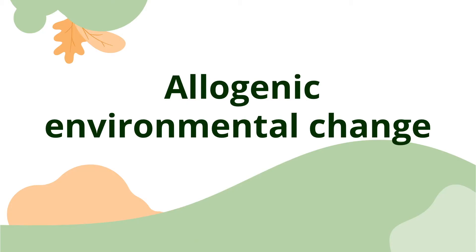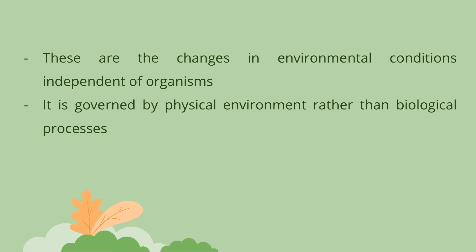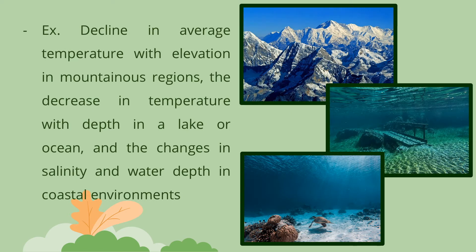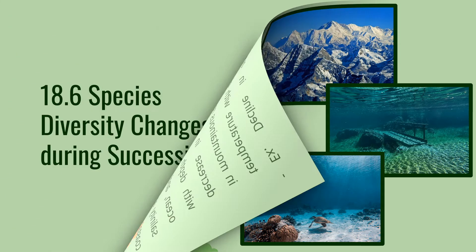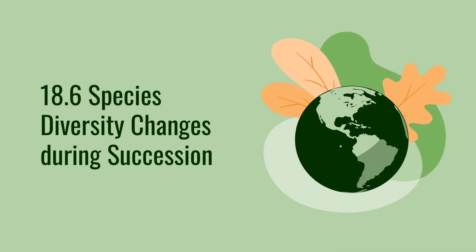Allogenic environmental change refers to changes in environmental conditions independent of organisms. It is governed by the physical environment rather than biological processes. Examples include the decline in average temperature with elevation in mountainous regions, the decrease in temperature with depth in a lake or ocean, and the changes in salinity and water depth in coastal environments.